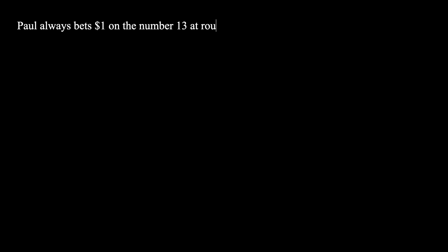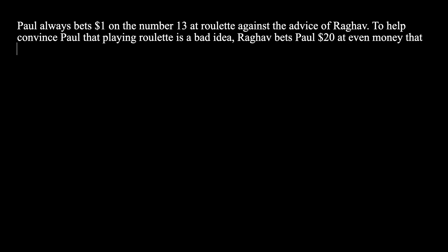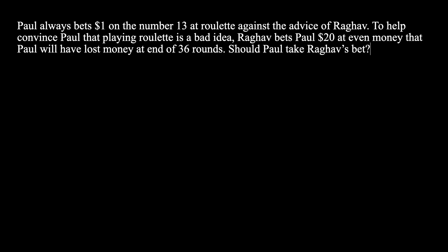Paul always bets $1 on the number 13 at roulette, against the advice of Raghav. To help convince Paul that playing roulette is a bad idea, Raghav bets Paul $20 at even money that Paul will have lost money at the end of 36 rounds. Should Paul take Raghav's bet?